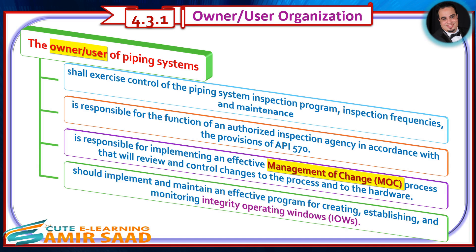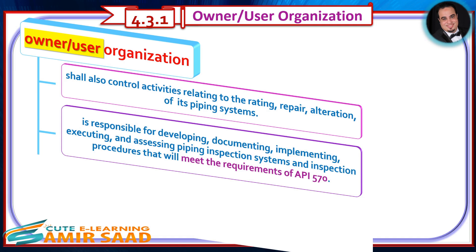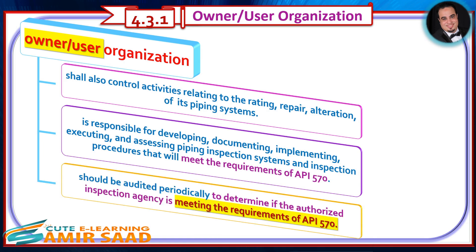The owner-user should implement and maintain an effective program for creating, establishing, and monitoring Integrity Operating Windows (IOWs). The owner-user is also responsible for developing, documenting, implementing, executing, and assessing piping inspection systems and inspection procedures that will meet the requirements of API 570.